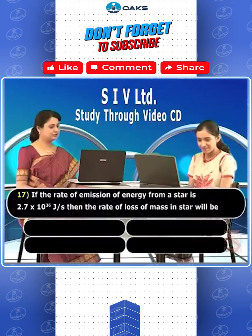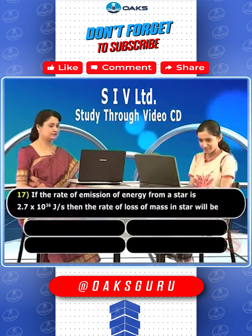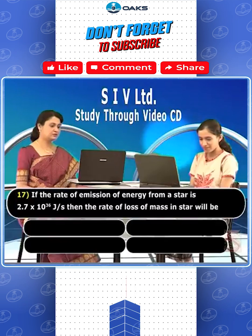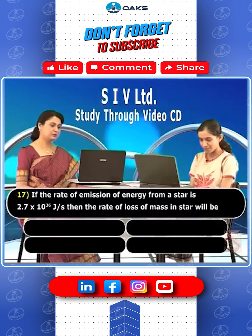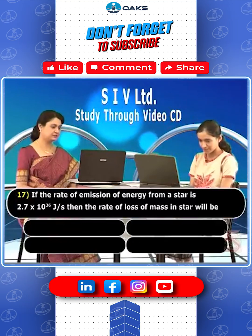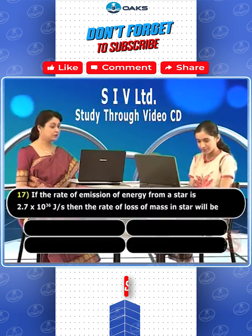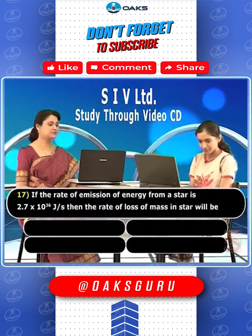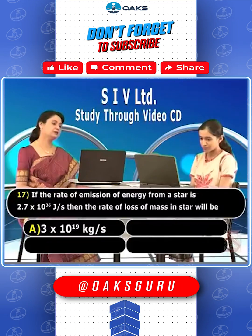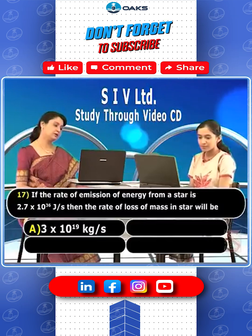If the rate of emission of energy from a star is 2.7 into 10 to the power of 36 joules per second, then the rate of loss of mass in the star will be: option A, 3 into 10 to the power of 19 kg per second.